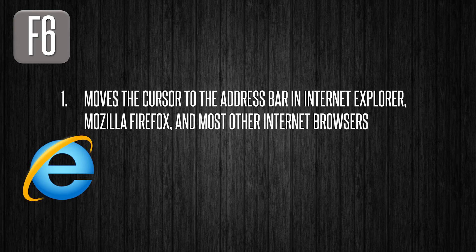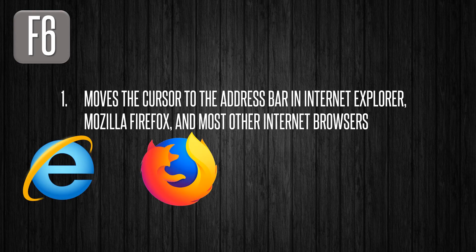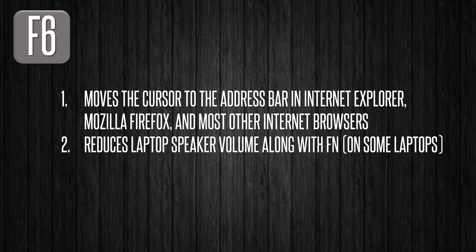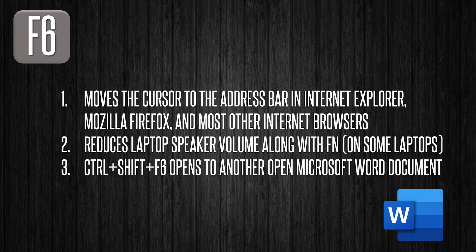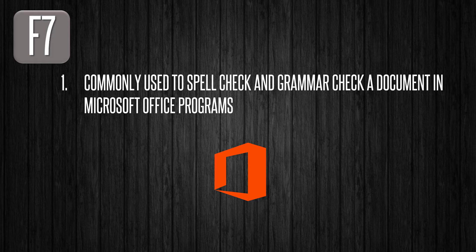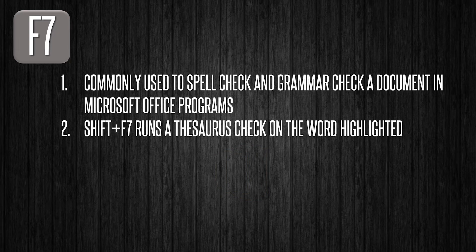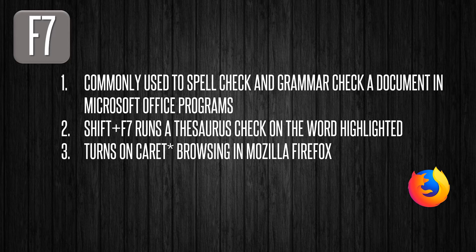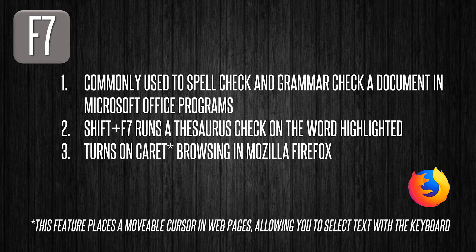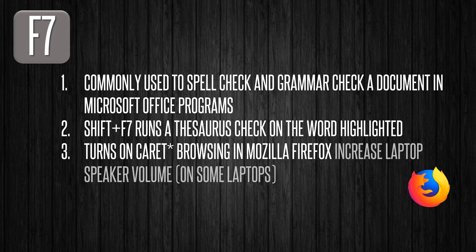F6 is not so commonly used, but it moves the cursor to the address bar in Internet Explorer, Mozilla Firefox, and other internet browsers. In many laptops, it reduces the speaker volume along with the Fn button. Ctrl Shift plus F6 opens another open Microsoft Word document. F7 is commonly used to spell check and grammar check a document in Microsoft programs such as Microsoft Word and Outlook. Shift plus F7 runs the thesaurus check on the highlighted word. It also turns on caret browsing in Mozilla Firefox. On some laptops it increases the speaker volume along with the Fn button, or if Fn plus F6 increases volume, then Fn plus F7 decreases the volume.